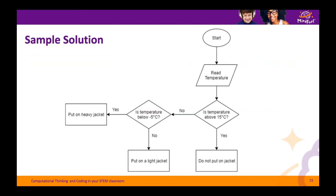Here is a simple solution for this scenario. Note that your flowchart may look completely different than this, but produce the same outcome — and that's totally fine. We start, then we have an input which will be the outside temperature, followed by the first decision: is the temperature above 15 degrees Celsius? If yes, we don't put on a jacket. If no, we have another condition: is the temperature below negative 5 degrees? If yes, we put on a heavy jacket. If not, we're deciding to put on a light jacket.